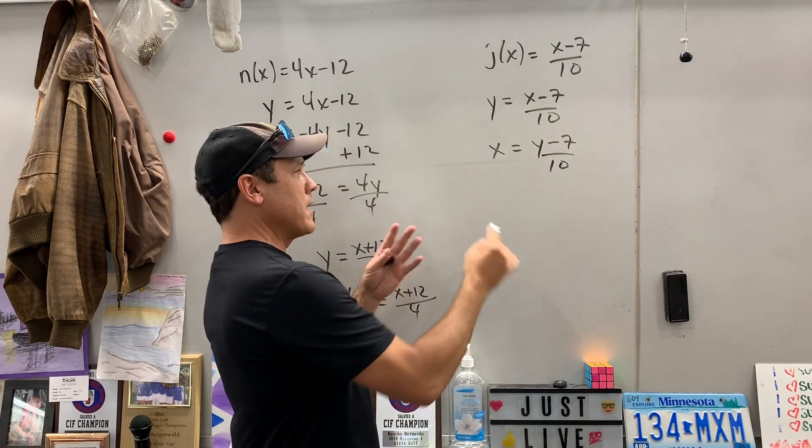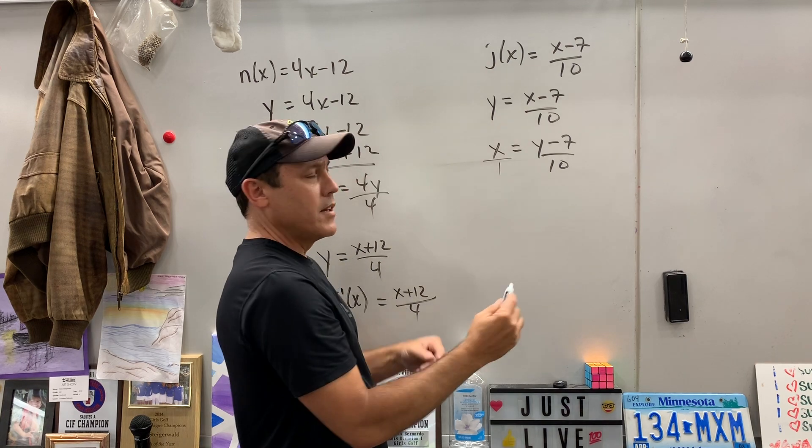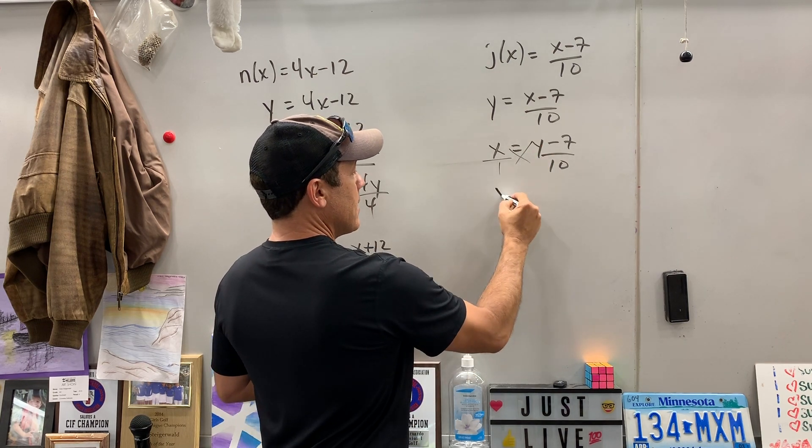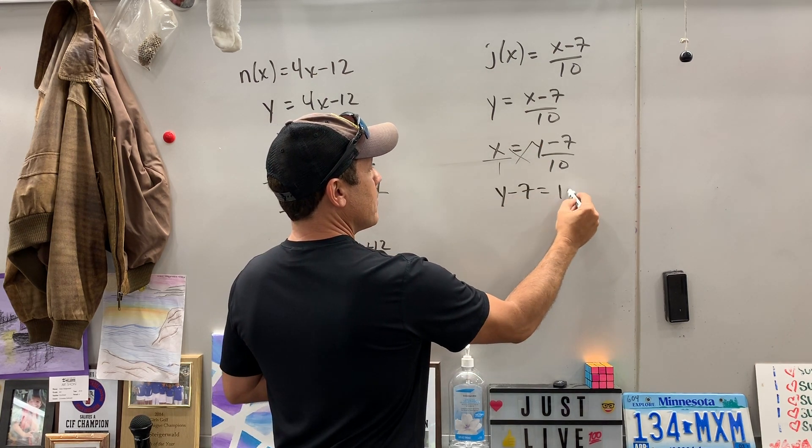Okay, now we got to do a little cross multiply. I'm going to put that over one. That's a little technique. And you get y minus 7 equals 10x.